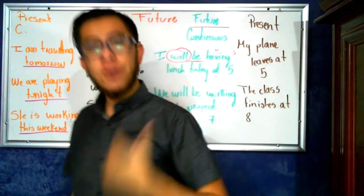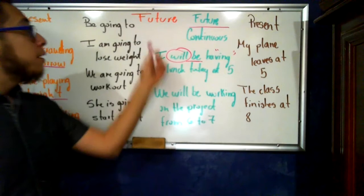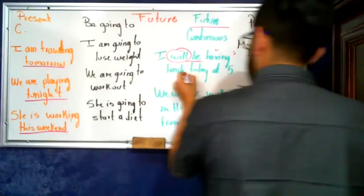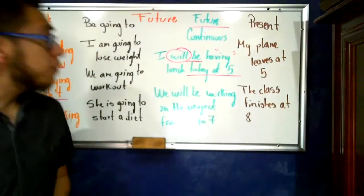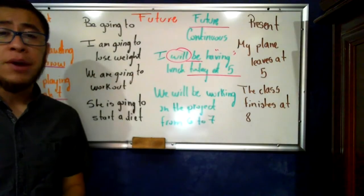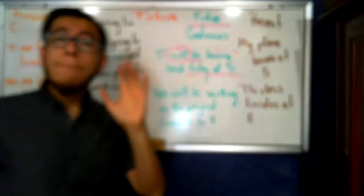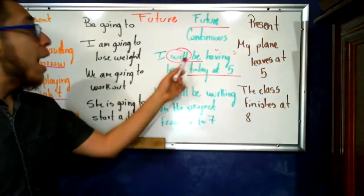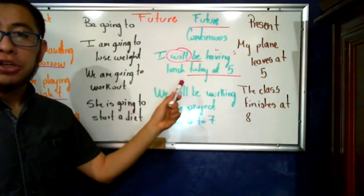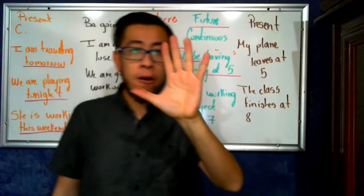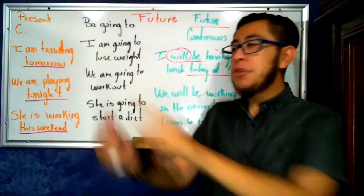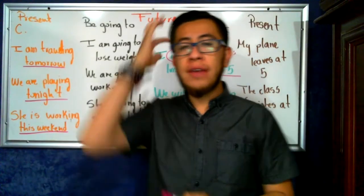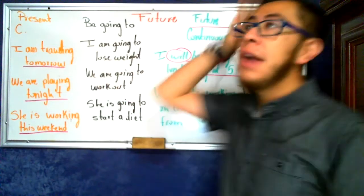In this case, future continuous will not be the exception to the rule. We have a moment in the future that would be today at five, today at five o'clock. So my sentence expresses that today at five, there's going to be an action that will be in progress. What is that action? Simple. I will be having lunch. So today at five o'clock, I will be having lunch. It's going to be an action that will be in progress at that time. Today at five, I'm going to be eating.